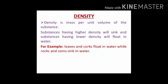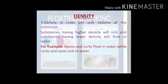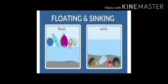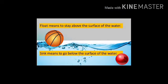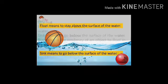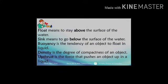अगली property है density या flotation। Density होती है mass per unit volume of the substance। जिन substances की ज़्यादा density होती है वो पानी में डूब जाते हैं, और जिनकी कम density होती है वो पानी के ऊपर तैरते हैं। जैसे leaves float करती हैं water में, जबकि rocks और metals पानी में डूब जाते हैं। Float मतलब पानी की सतह के ऊपर रहना और sink मतलब पानी की सतह के नीचे चले जाना। यह floating and sinking की property object के material और उसकी shape पर depend करती है।